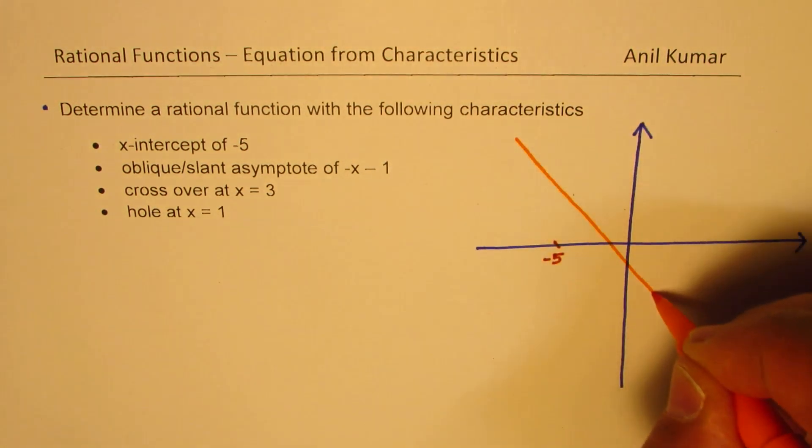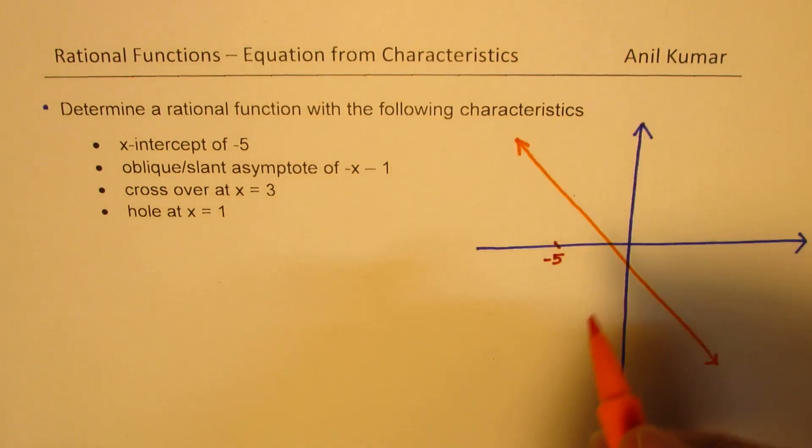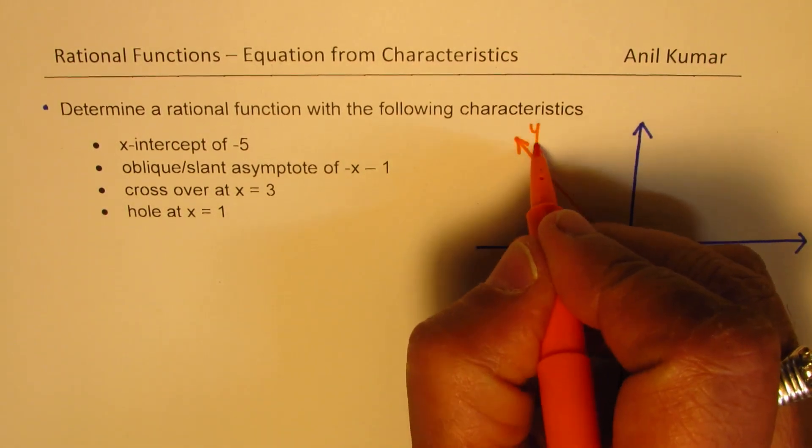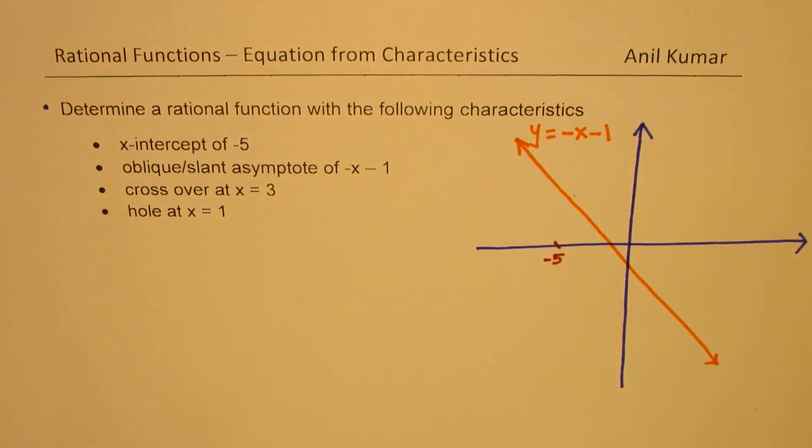kind of like this, and this line for us is y equals minus x minus 1. So the graph has to be asymptotic to this.